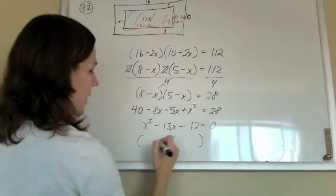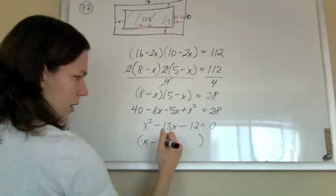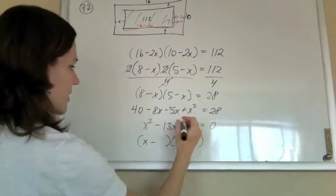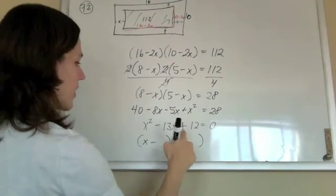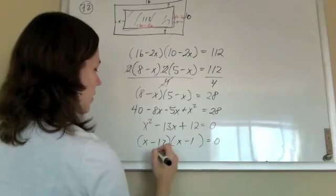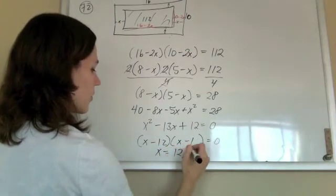This thing will factor for us. That's x minus 12. Oh, that was supposed to be a positive 12 there. There we go. So that's x minus 12, and x minus 1 equals 0. So x is 12 or 1.